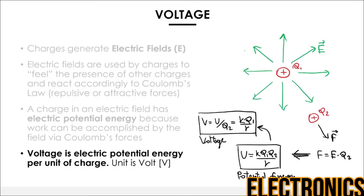Voltage is electric potential energy per unit of charge. Using the previous example, if the potential energy of Q2 was K × Q1 × Q2 / R, then the voltage at the position of Q2 equals K × Q1 / R — we simply eliminate Q2. Voltage is a more convenient way to talk about electric potential energy in electrical circuits, and it's intimately related to it. Voltage is measured in volts, with the symbol capital V.